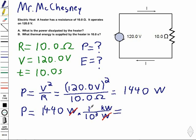So 10 to the third means I'm going to take my decimal place and when I divide by 10 to the third, it's going to move over one, two, three spots. So it should end up in between the one and the four. So I get 1.44 kilowatts.